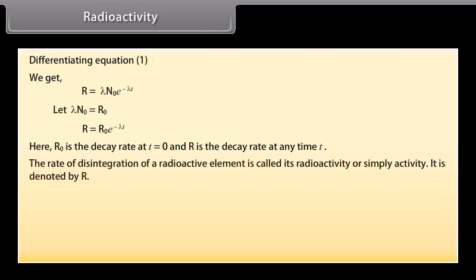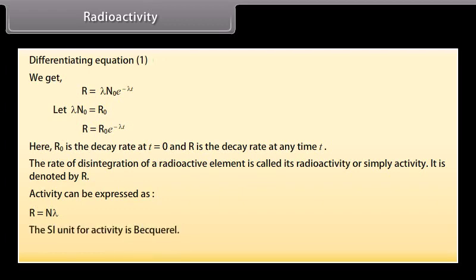The rate of disintegration of a radioactive element is called its radioactivity or simple activity. It is denoted by R. Activity can be expressed as R is equal to Nλ. The SI unit for activity is Becquerel. 1 Becquerel is equal to 1 Bq is equal to 1 decay per second.